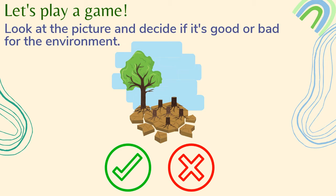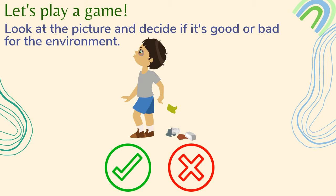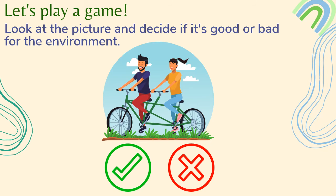Look at the picture and decide if it's good or bad for the environment. It's bad! Very good! Can we do like this boy? No! It's bad! They are biking — very good! It's useful for our environment.